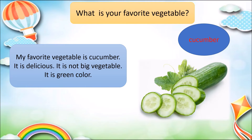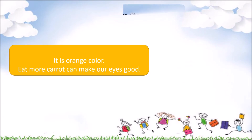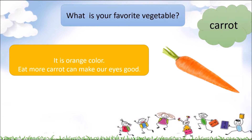Please, everyone, repeat after me: Cucumber. Cucumber. What is your favorite vegetable? The answer — it is orange color.